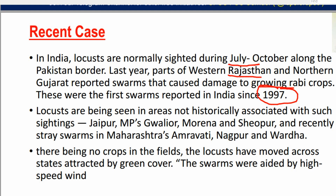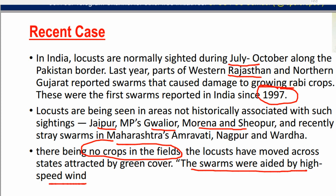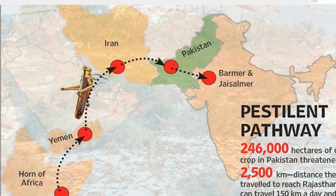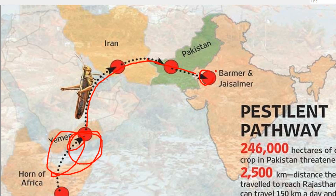This year locusts again came, reaching Jaipur, Gwalior, Morena, Sheopur in Madhya Pradesh, Gurgaon and Uttar Pradesh. This happened because there are no crops in the fields of western India, so they are traveling eastward for food. Climatically, high-speed winds also aided locusts traveling toward eastern India. Looking at the map: locusts start from the Saudi Arabian Peninsula and Horn of Africa area, move toward Iran, cross Afghanistan, go to Pakistan, then reach Rajasthan, then travel to Uttar Pradesh, South India and the Gangetic Plain.